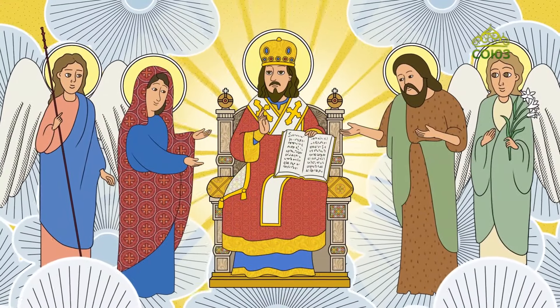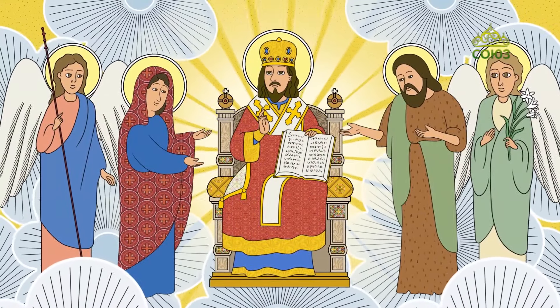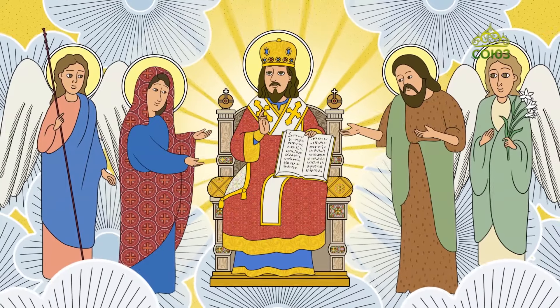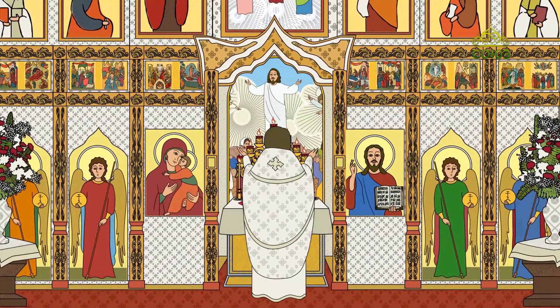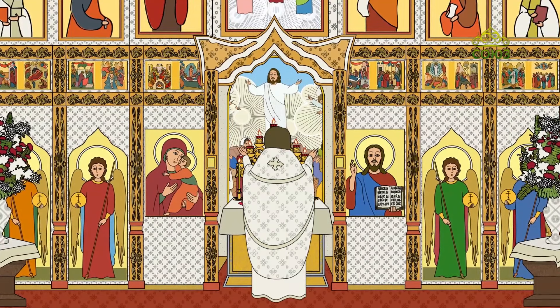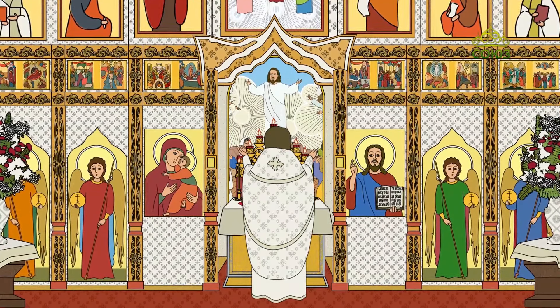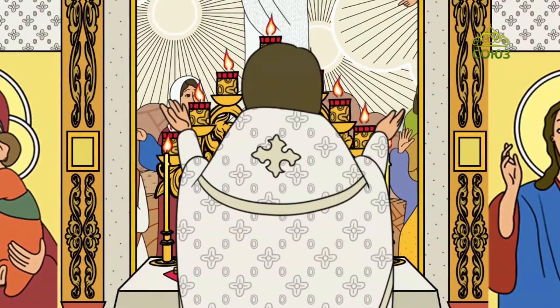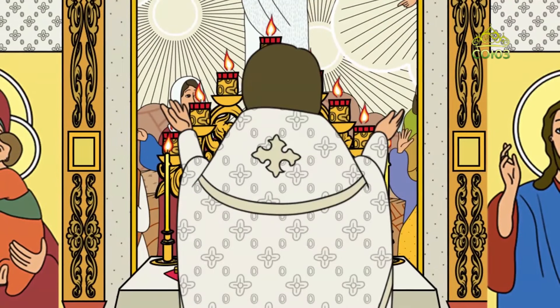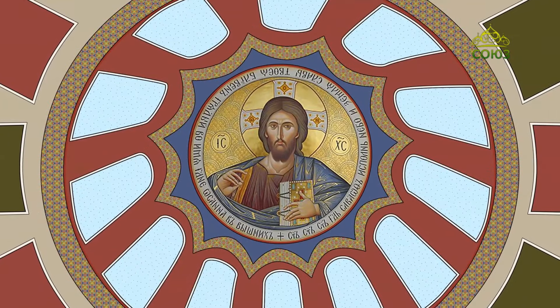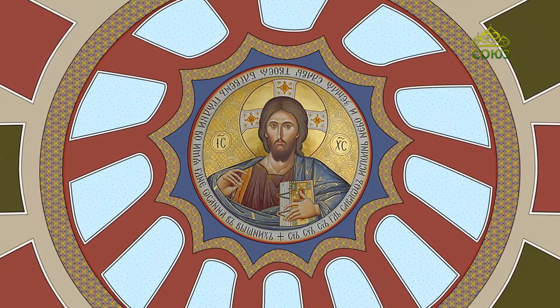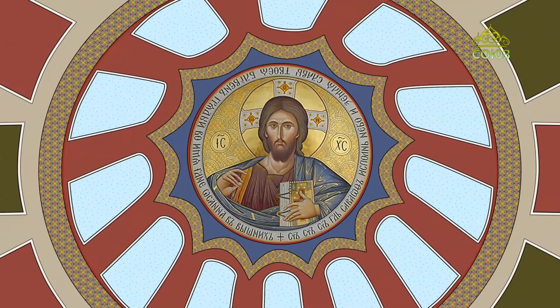Спаситель может изображаться в полный рост или восседающим на троне. Образ Христа Вседержителя используется в одиночных иконах, в составе деисусных композиций, в иконостасах, стенных росписях и т.д. Так этот образ традиционно занимает пространство центрального купола православного храма.